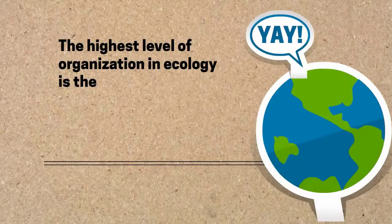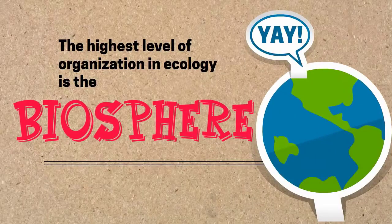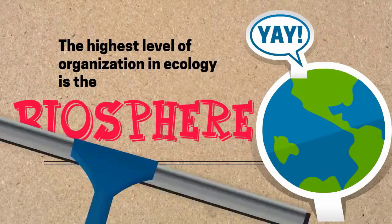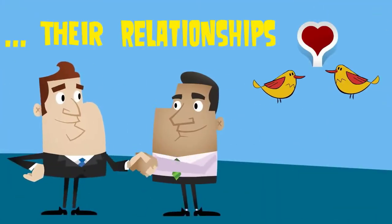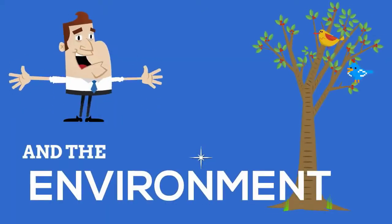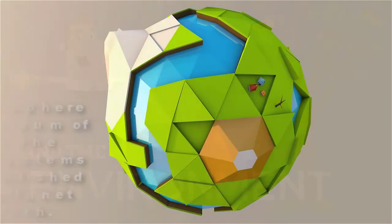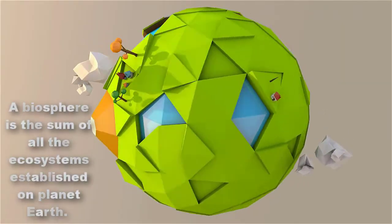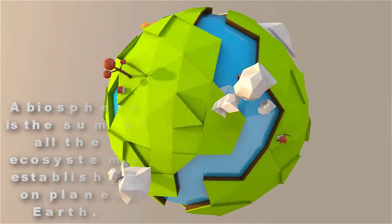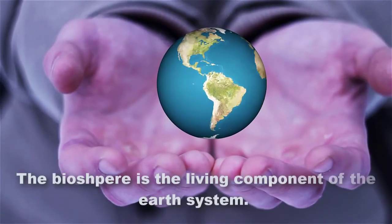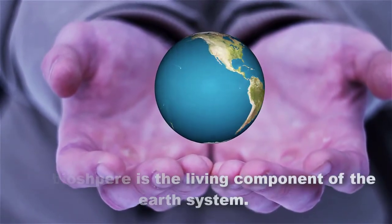The highest level of organization in ecology is the biosphere. The biosphere is the global ecological system of all living creatures, their relationships with each other, and the environment. A biosphere is the sum of all of the ecosystems established on planet Earth. It is the living component of the Earth's system.